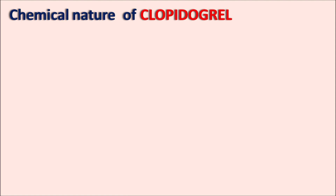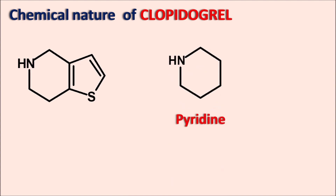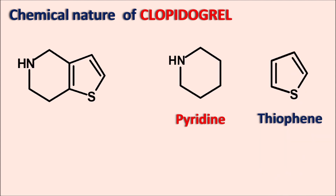What is the chemical nature of clopidogrel? This drug belongs to the thienopyridines. The thienopyridine ring system is made up of two individual rings — one is the pyridine ring, which is saturated, and the other is the thiophene ring. When thiophene is combined with pyridine, it produces the thienopyridine ring system.